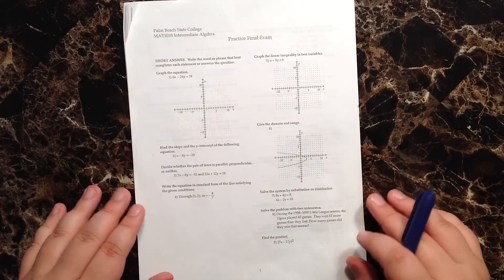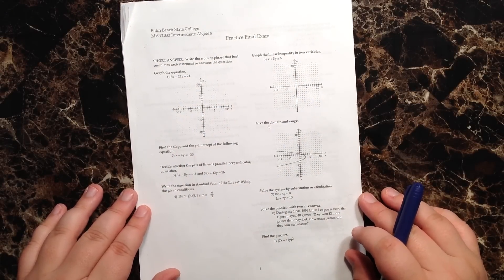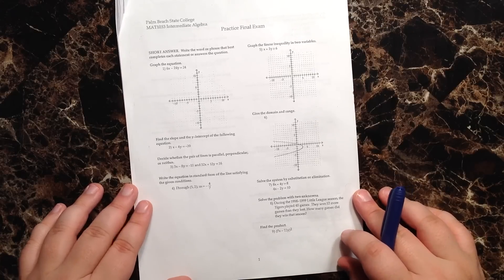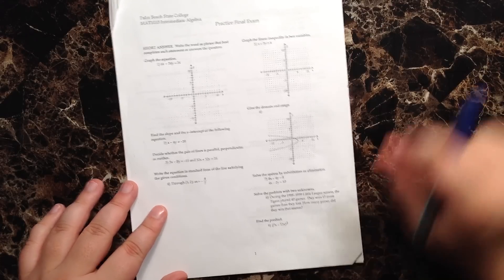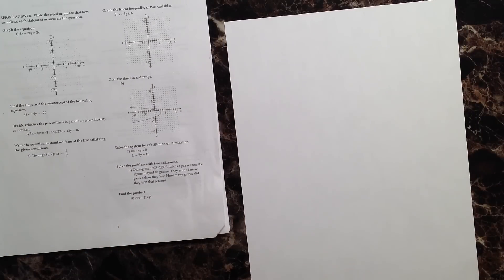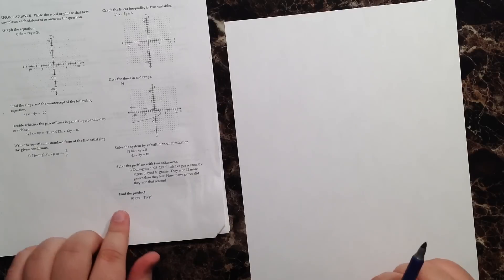Hello and welcome back to the final exam review series for intermediate algebra. This is Joe Brownlee and we are on question number nine. Let's get into it. Question number nine, the directions are pretty easy enough.